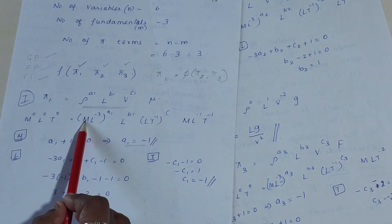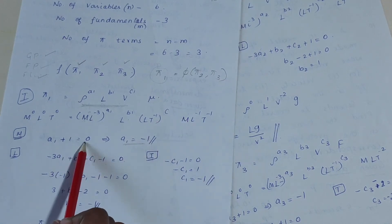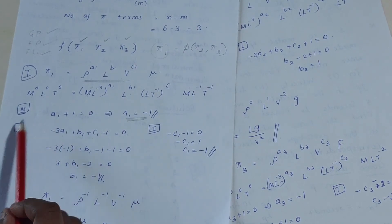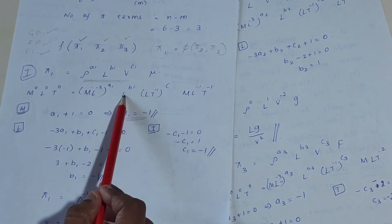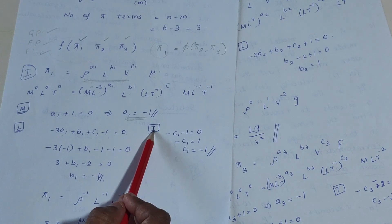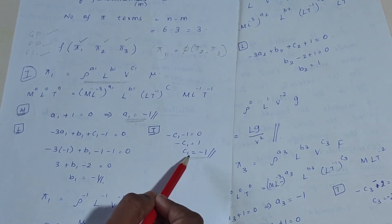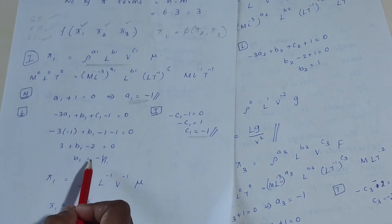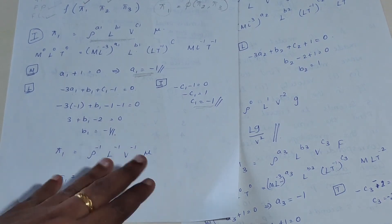Equating the power of M: a₁ + 1 = 0, so a₁ = −1. Equating the power of T: −c₁ − 1 = 0, so c₁ = −1. Equating the power of L: −3a₁ + b₁ + c₁ − 1 = 0; substituting a₁ and c₁ gives b₁ = −1. Therefore, π₁ = μ / (ρ · L · V).